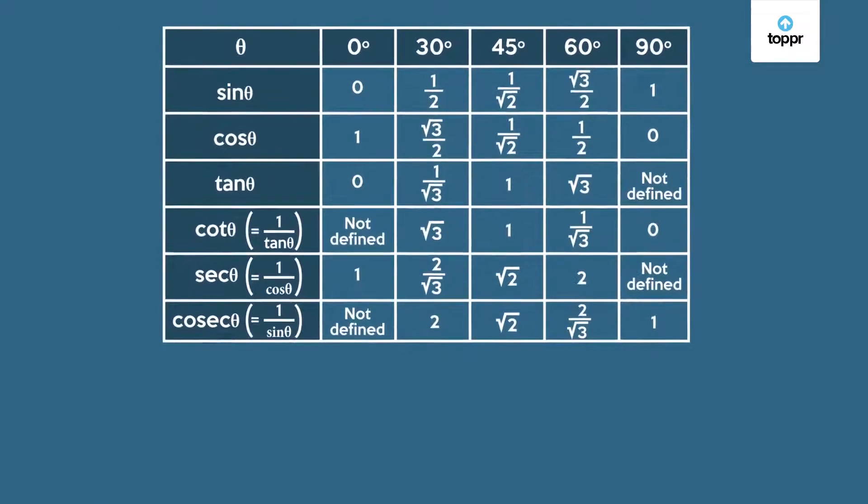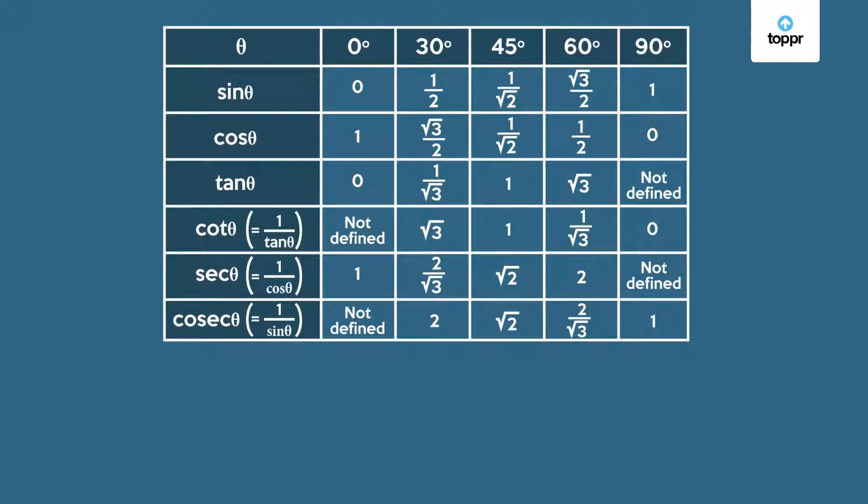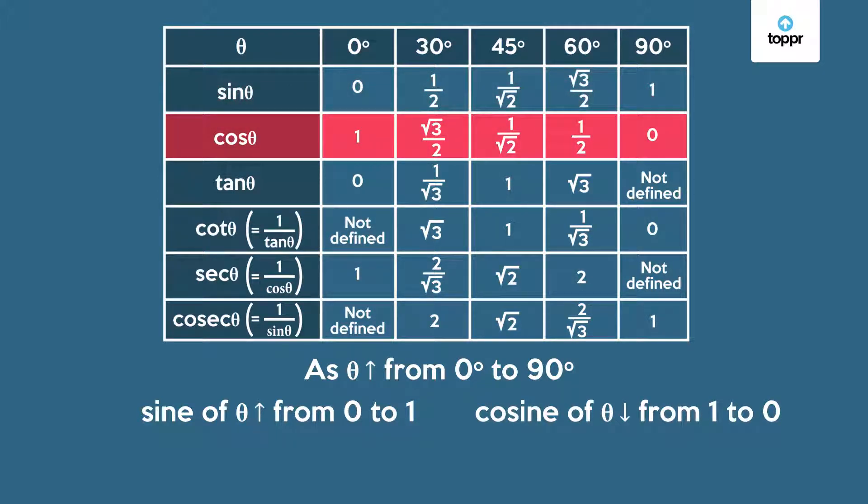Now observe this table carefully. As theta changes from 0 to 90 degrees, the value of the sine increases from 0 to 1. But as we move from left to right, observe that the cosine of theta decreases from 1 to 0.